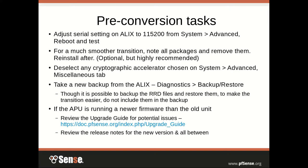Before doing the actual conversion, there are a few things you can do to make it easier. On your ALIX, go to System > Advanced on the Admin Access tab. If you scroll down to the bottom, change the serial port speed to 115200. It's probably on 38400 or 9600 by default. Knock it up to 115200, and if you can, restart it and give it a test. That ensures when you move the configuration over, the serial speed will be consistent.